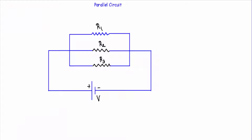In this video I will talk about parallel circuits. I will try to cover each and everything related to a parallel circuit. When one end of each resistance is joined to a common point and the other end of each resistance is connected to another common point, so that there are as many paths for current flow as the number of resistances, it is called a parallel circuit.